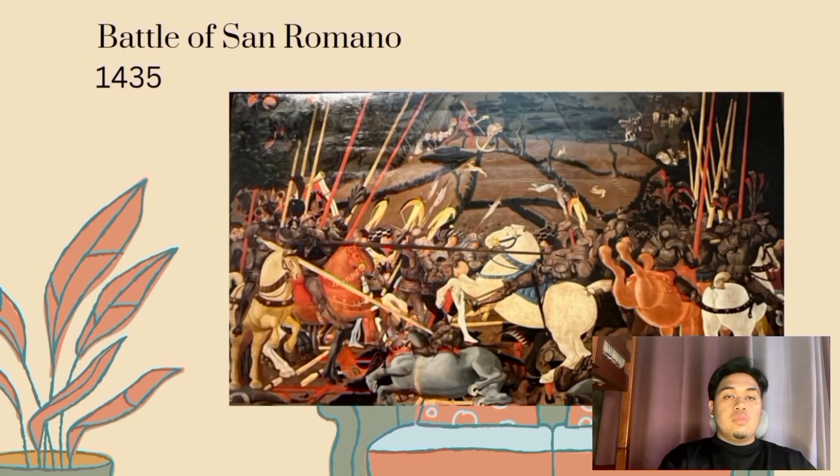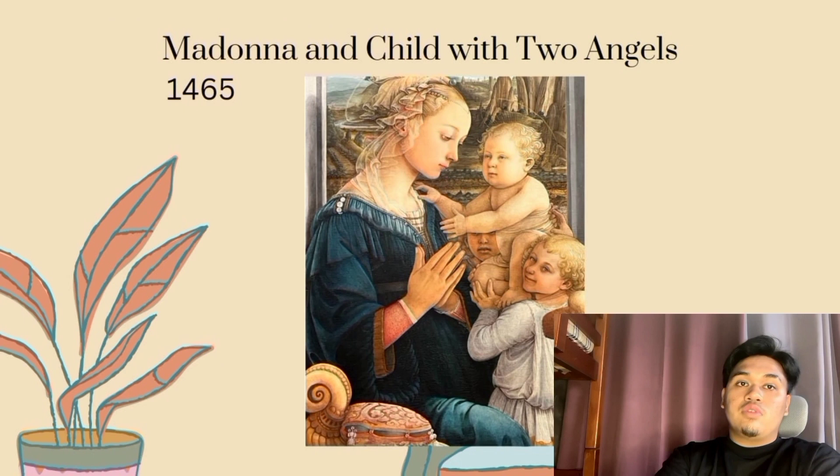Paolo Uccello may not be a familiar name, but this Florentine painter was one of the pioneers of linear perspective in art. He said that this was his obsession and he would burn the midnight oil trying to grasp the exact vanishing point.